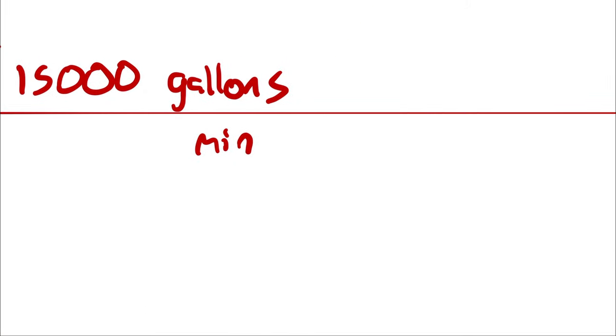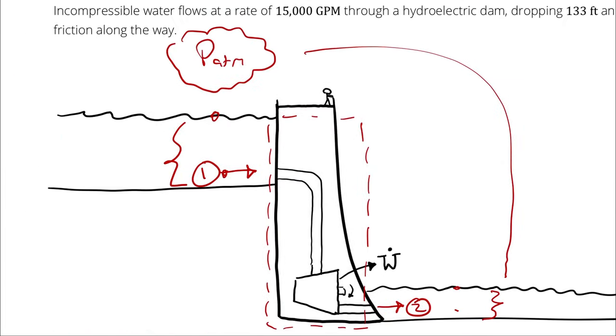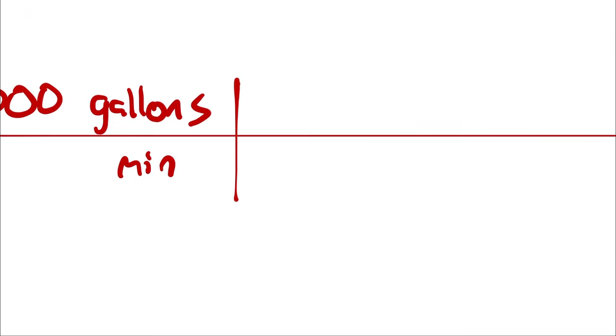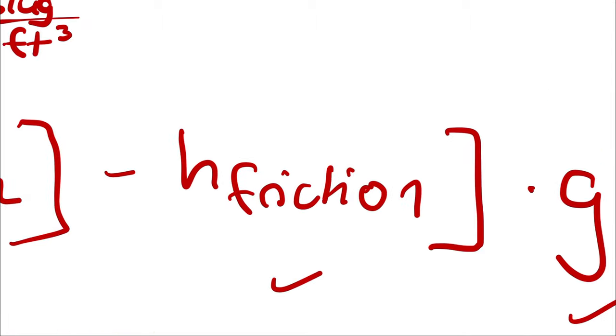And then I multiply by the difference in elevation between Z1 and Z2. That was 133 feet. This is my imperial unit, boys, by the way.